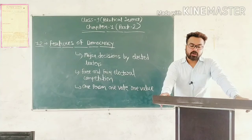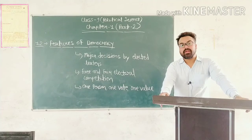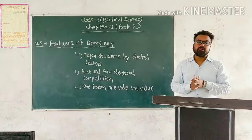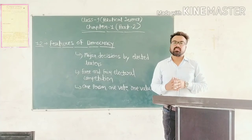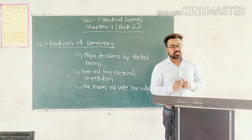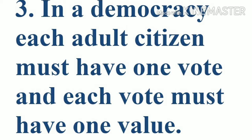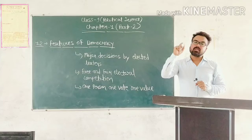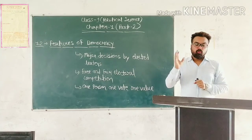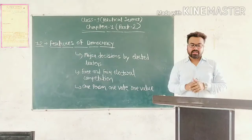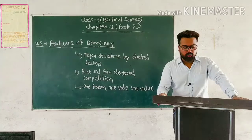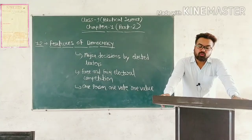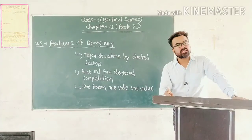This is based on a fundamental principle of political equality, which gives us the third feature of democracy: each adult citizen must have one vote and each vote must have equal value — ہر بالغ شہری کو ایک vote ملنا چاہیے اور ہر vote کی value برابر ہونی چاہیے۔ We will read more about this in chapter 3.